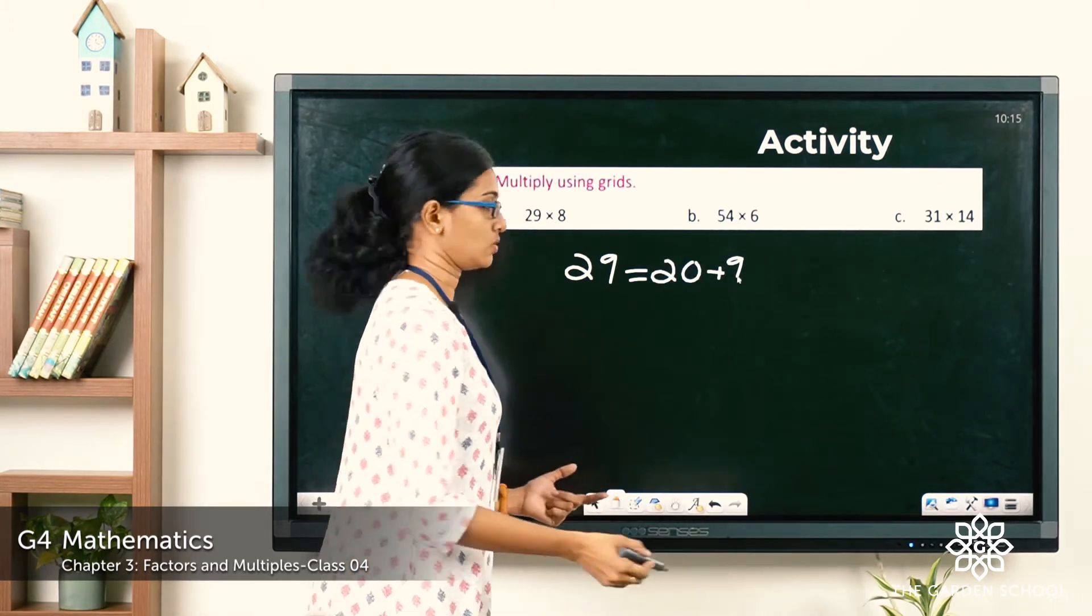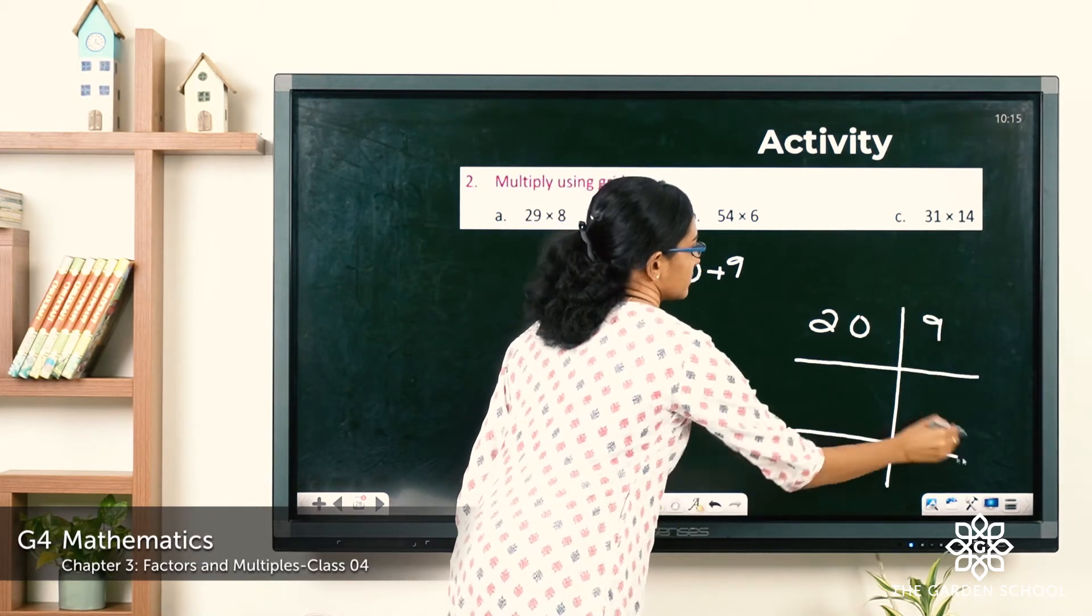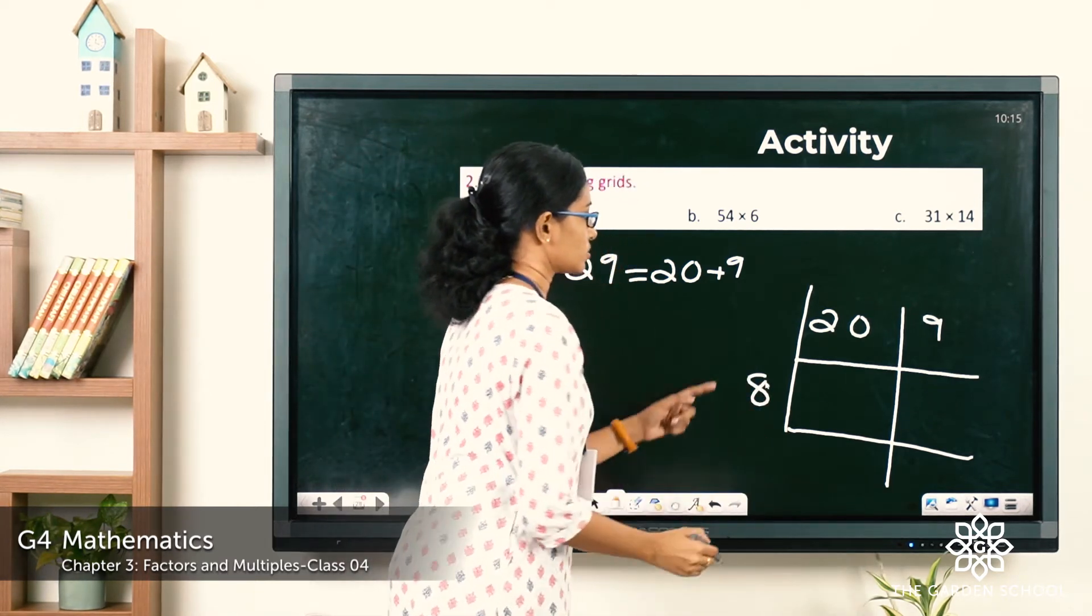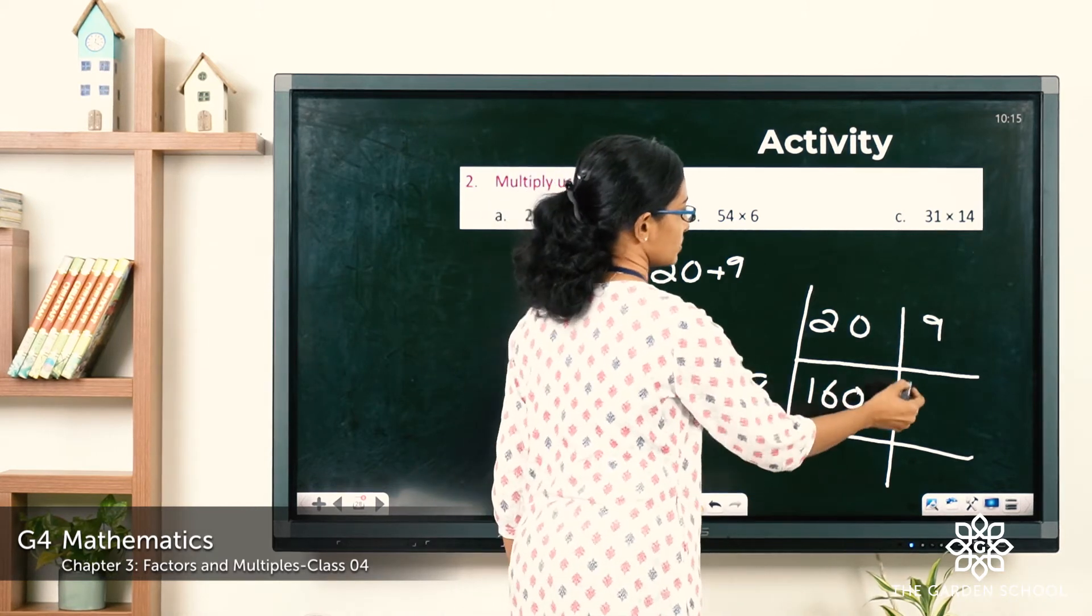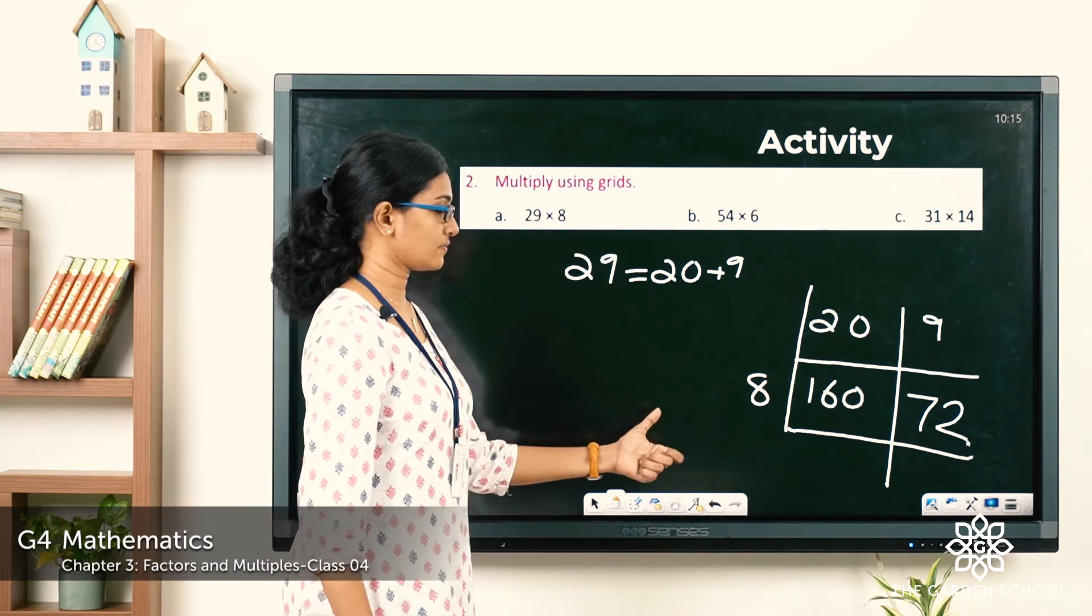So let's draw the grid now. It's 20 and 9. Now you have to multiply it with 8. So 8 into 20 is 160, and 8 into 9 is 72. Now let's add up the two products to get the final answer.